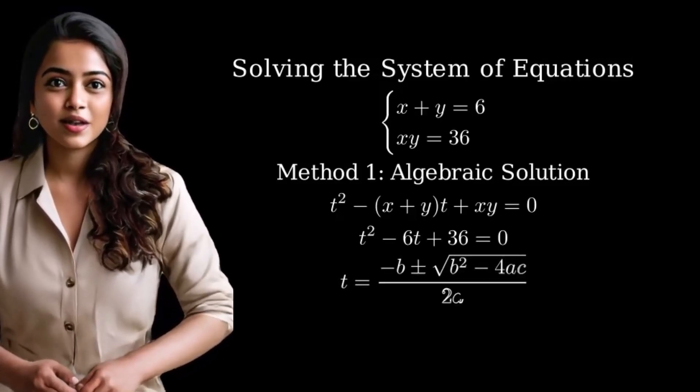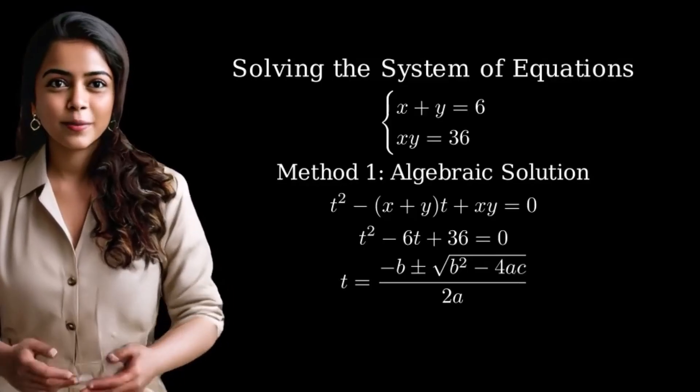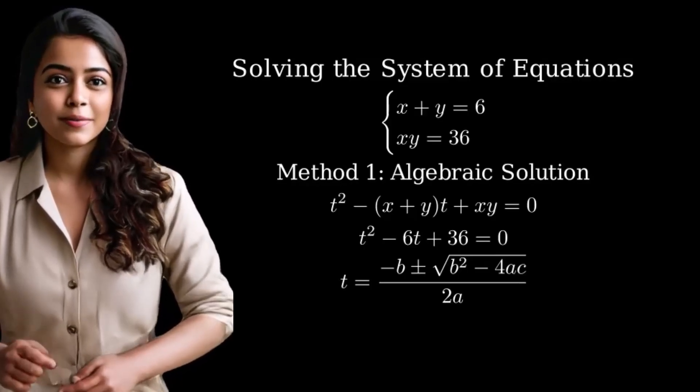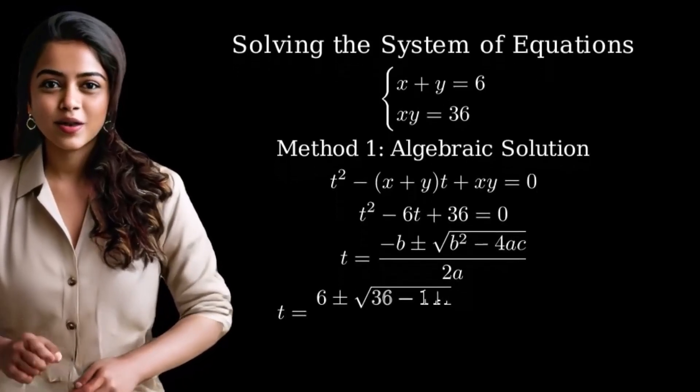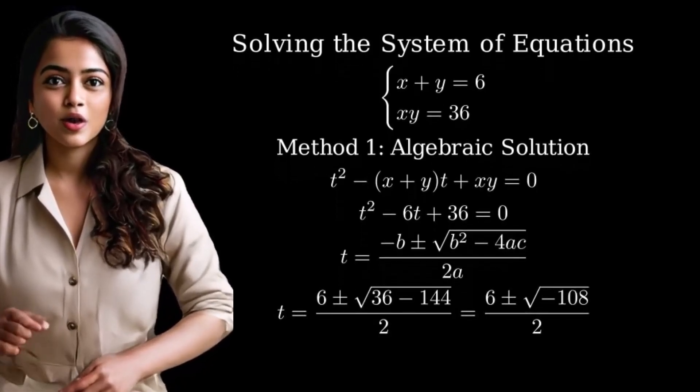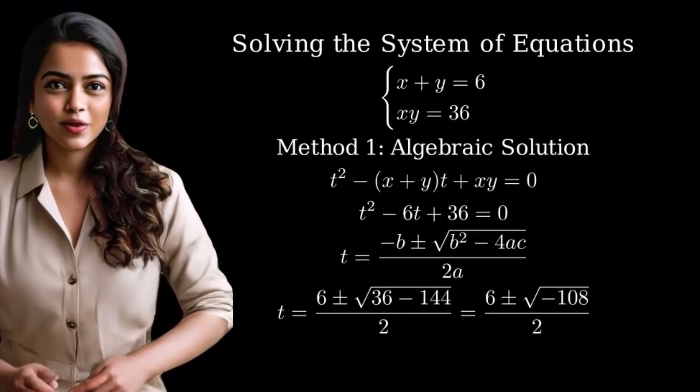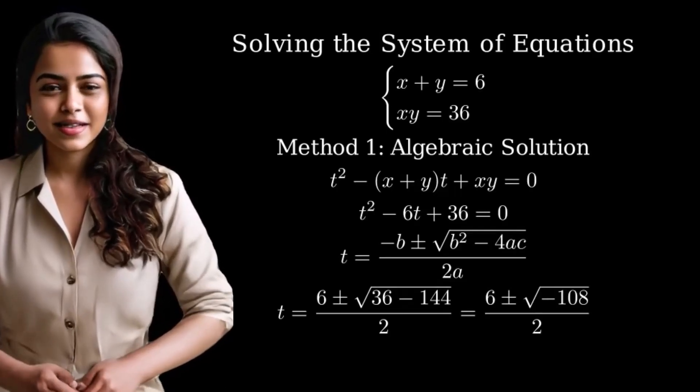To solve this, we'll use the quadratic formula. t equals negative b plus or minus the square root of b squared minus 4ac all over 2a. Plugging in our values, we get t equals 6 plus or minus the square root of negative 108 all over 2.